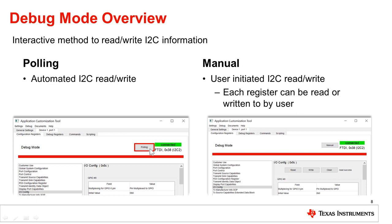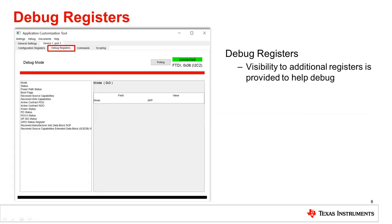Manual mode allows you to initiate I2C communication. Once the GUI is in manual mode, each register displays three buttons: read, write, and clear. To switch back to polling mode, the manual button can be pushed. While debug mode can change the registers that you normally have access to, it can also change additional registers found under the debug registers tab, which are useful for further debugging.